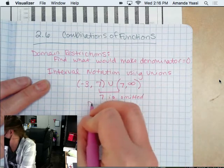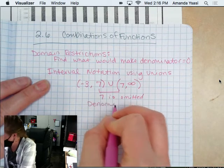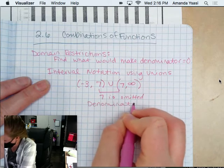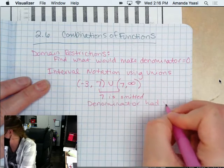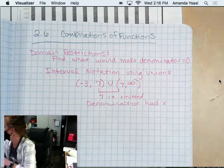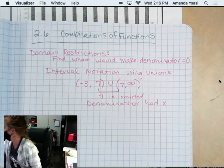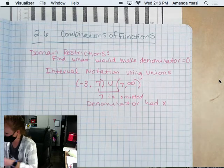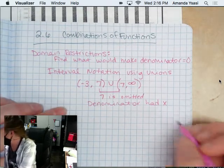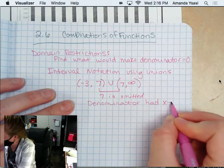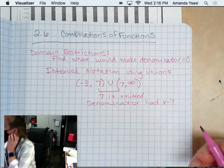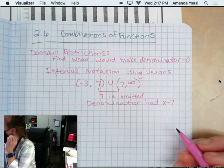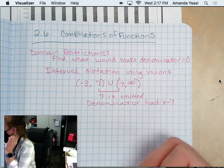Let's say the denominator had X. Let's say the denominator had X minus 7 on the denominator. So if the denominator was X minus 7, then 7 would be what made the denominator equal to zero.